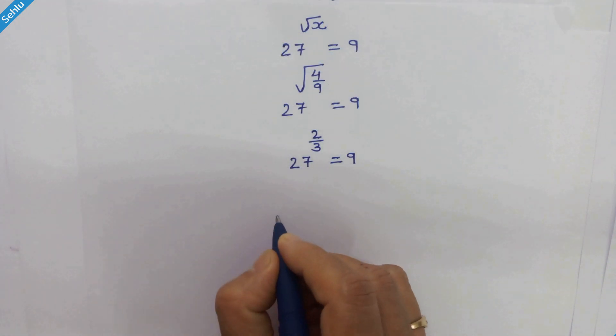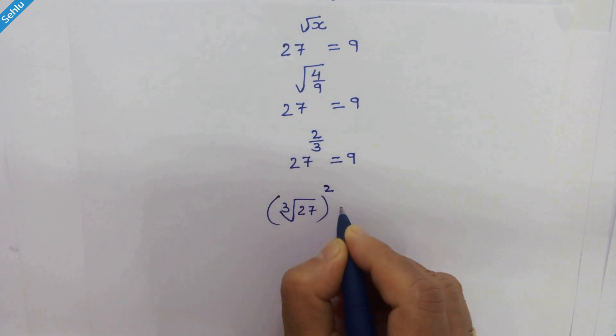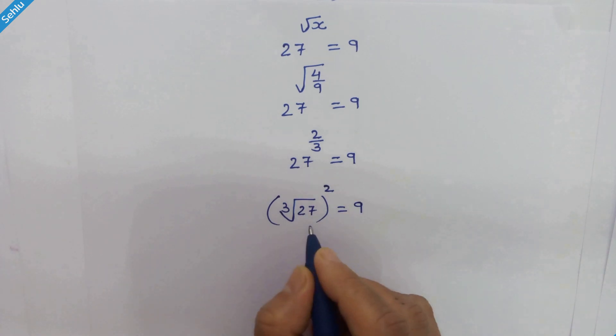This can be written as cube root of 27, whole squared, equals 9. Cube root of 27 is 3, so we have 3 squared equals 9.